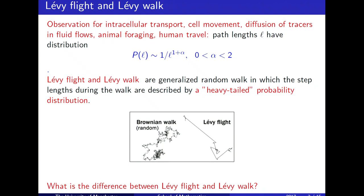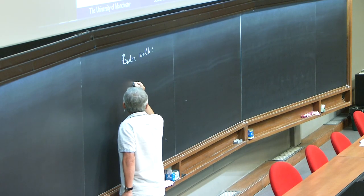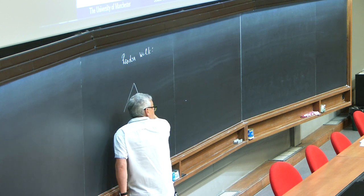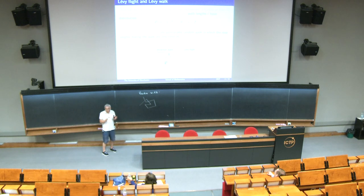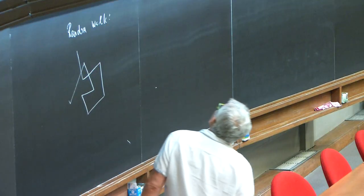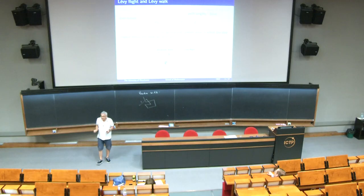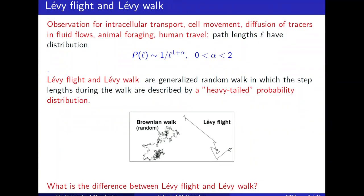This is a widespread phenomenon in nature, in biology, in physics. We have the following random walk: the particle moves in a straight line, then turns isotropically, then again moves in a straight line and turns. This specific random movement has a path length L distributed according to a power law, with alpha varying from zero to two, which means the second moment is divergent. This appears everywhere — inside cells, in turbulence, in human travel, animal foraging, and especially in the movement of bacteria.